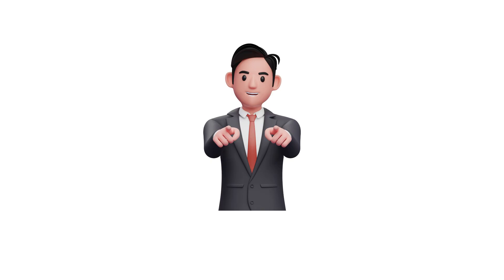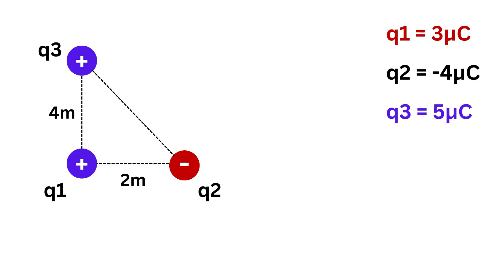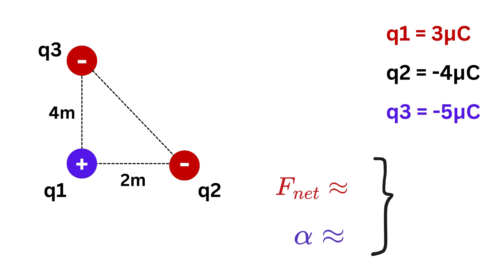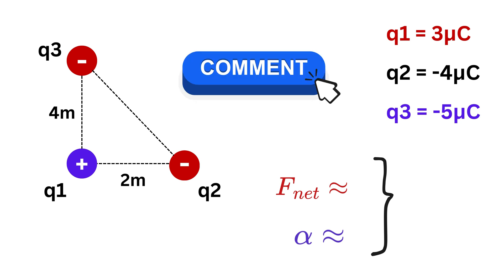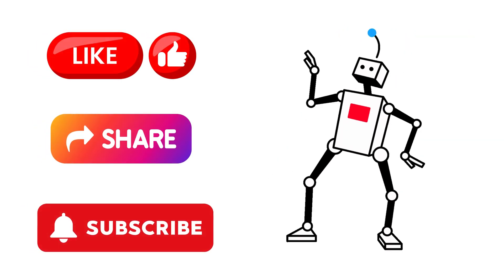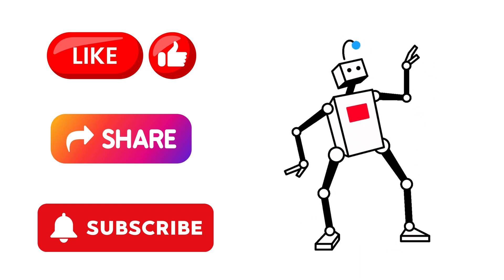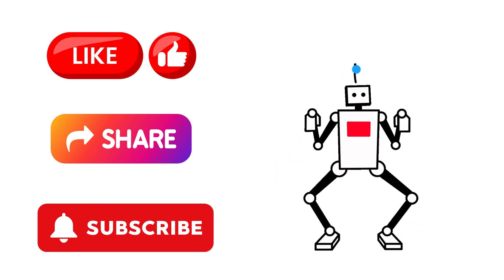Now it's your turn. Suppose charge q3 becomes negative, i.e., −5 micro-coulombs instead of positive. Find the magnitude and direction of the net force acting on q2 due to both q1 and q3 at this exact moment in this configuration.